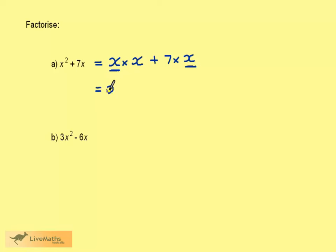So we write this down and open a bracket. What we have left is the x from the first term, the plus sign, and the 7 from the second term.